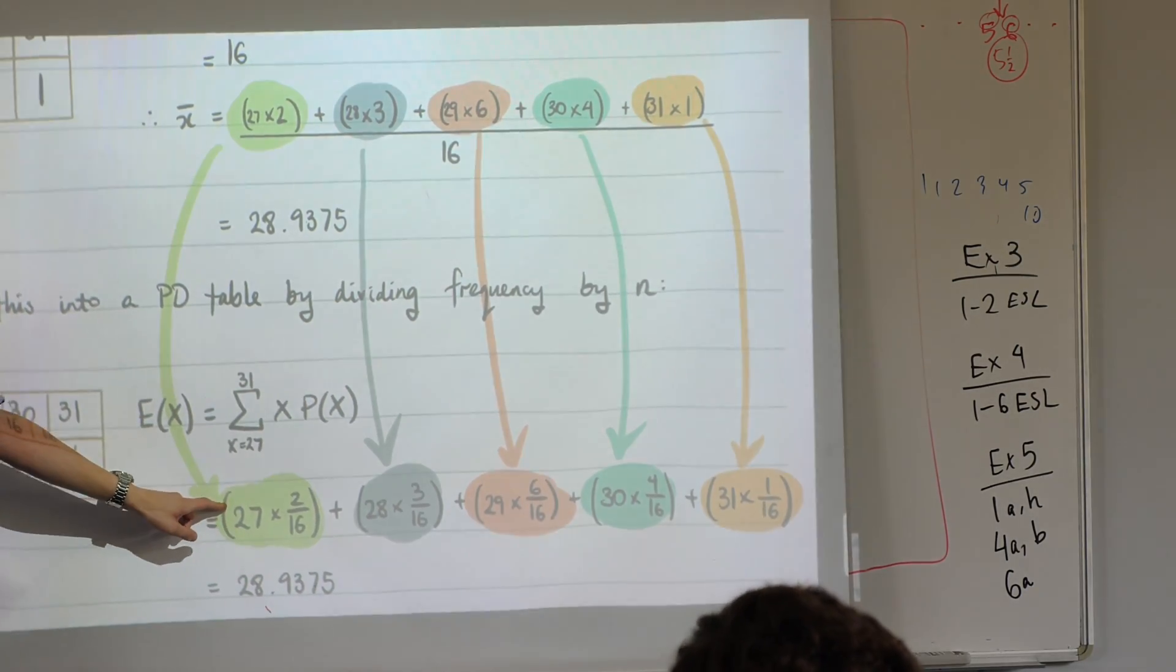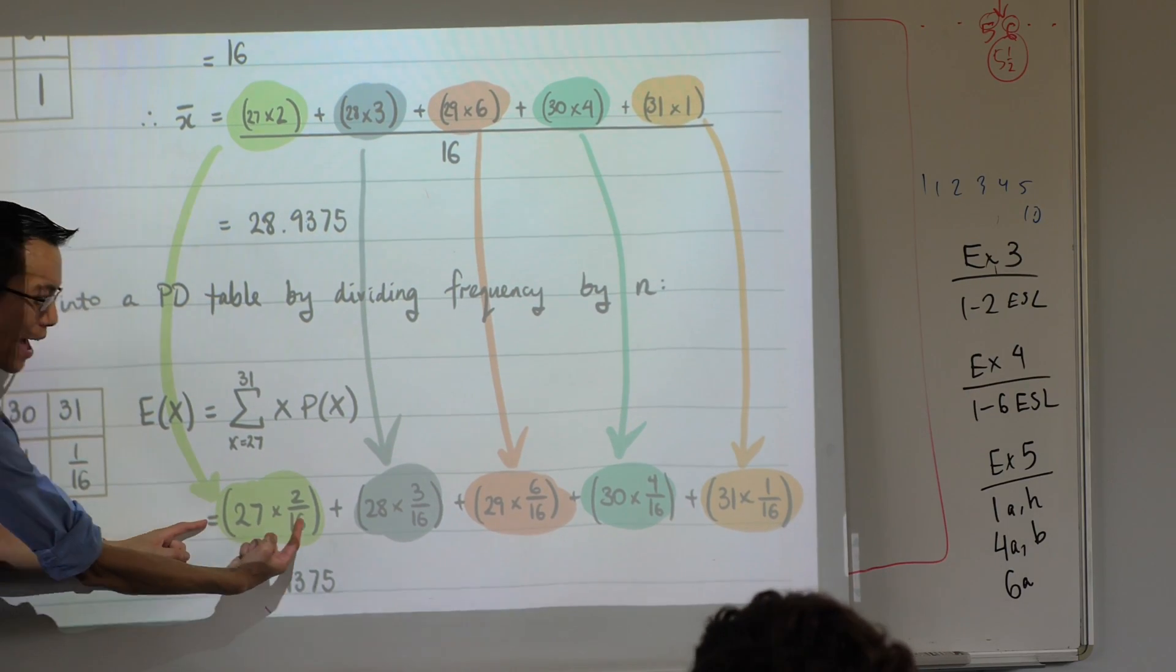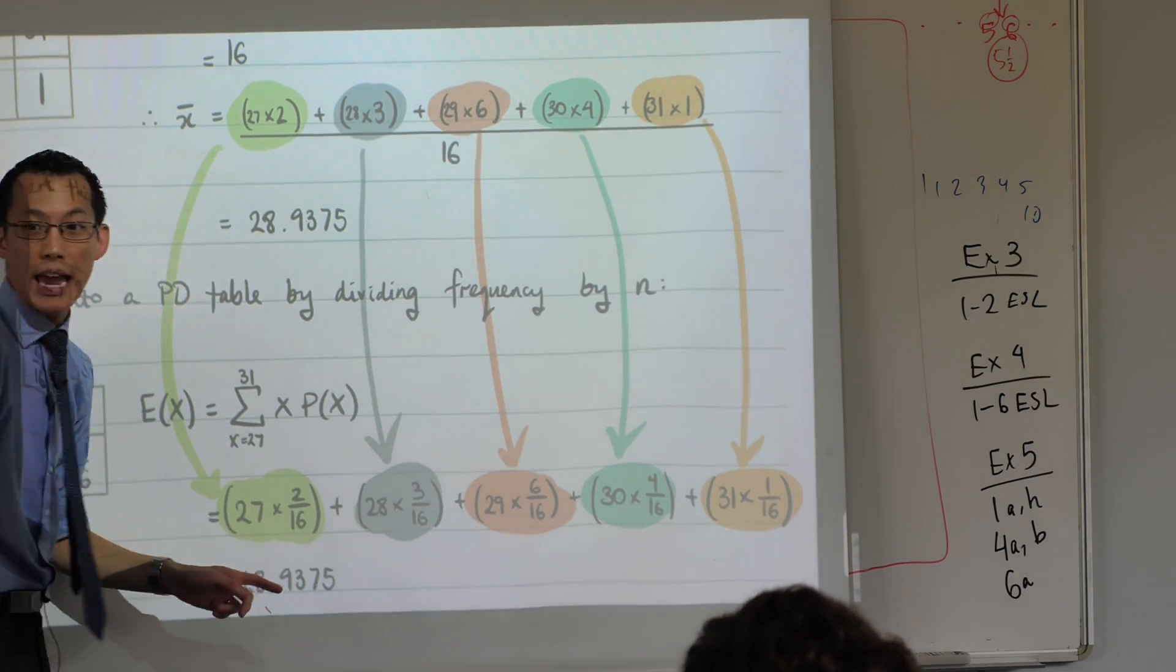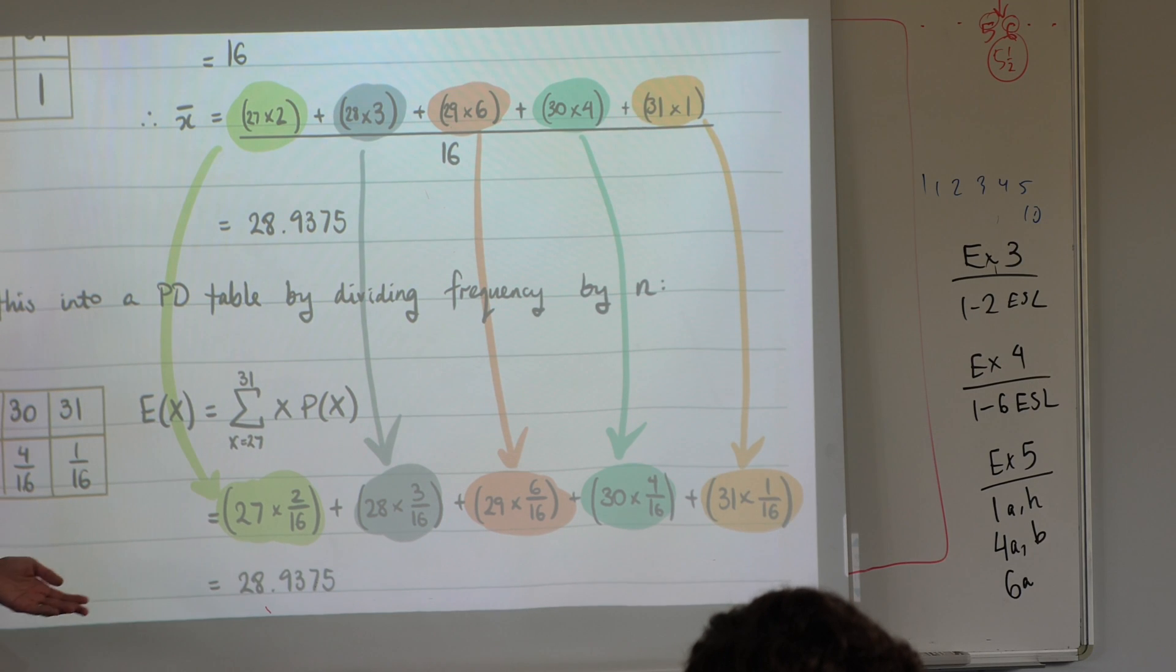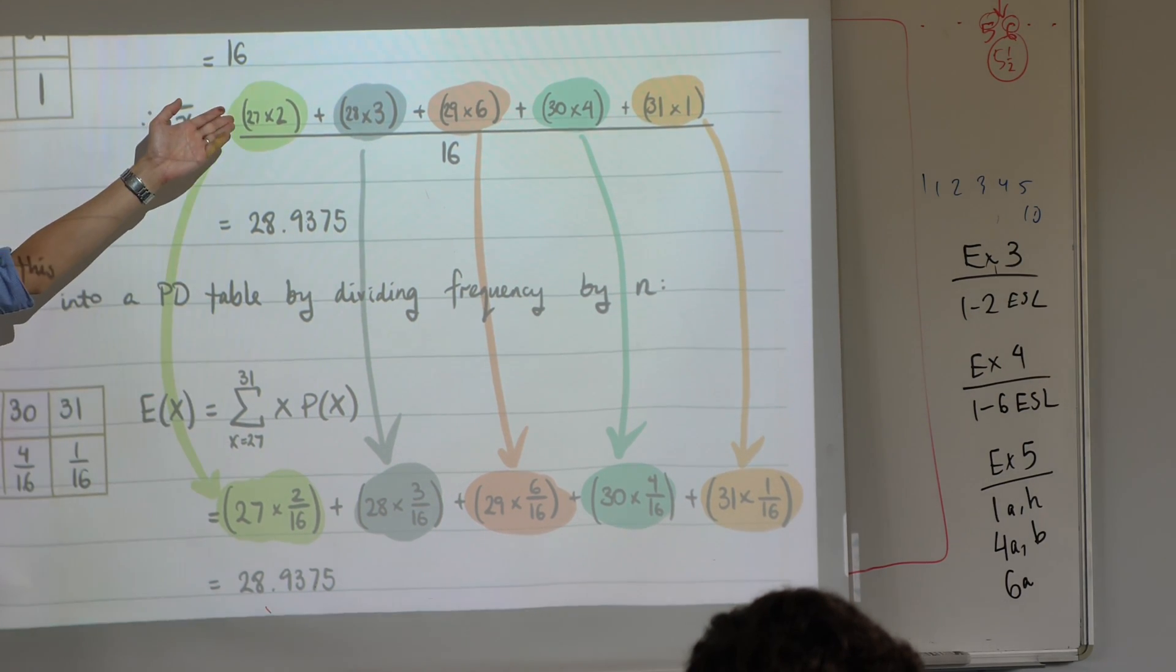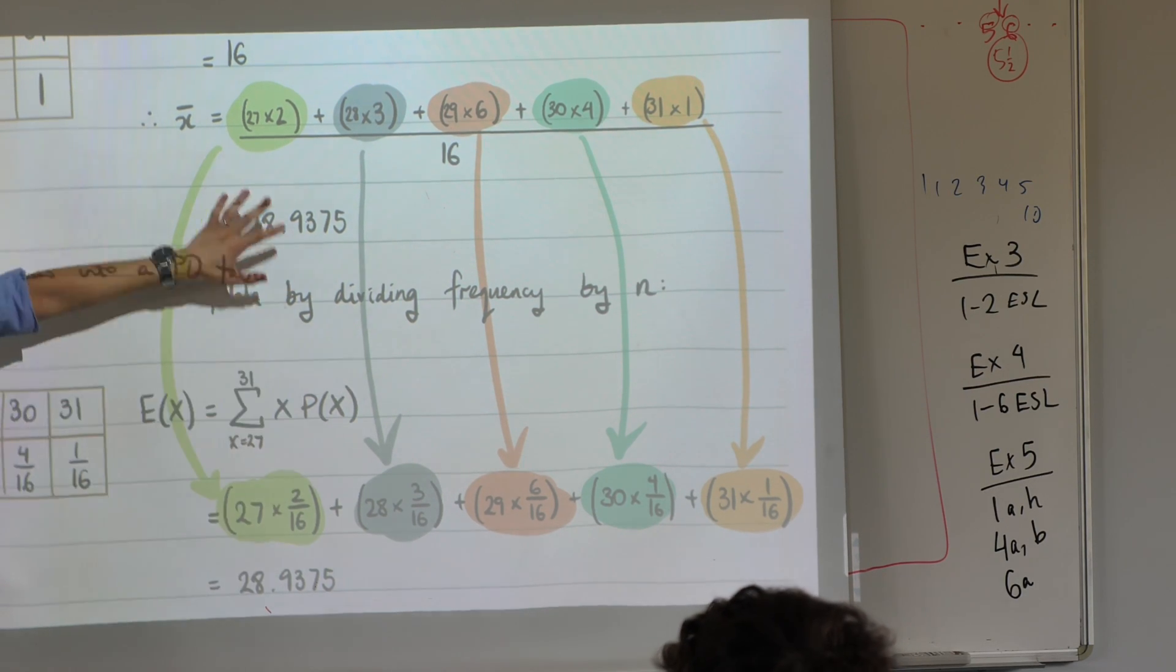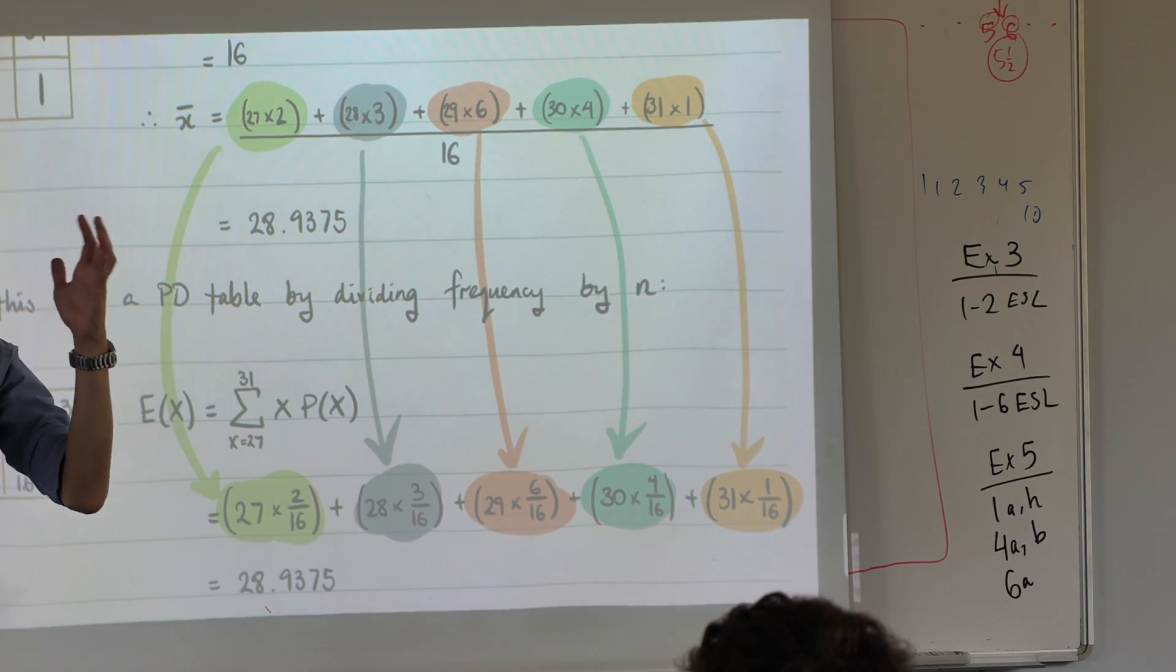But now look, that divided by 16 is what you had to do to turn each of these into a probability. Like three out of 16 is a probability. So that's why it's exactly the same calculation just in slightly different order. So I want you to think about expected value and the mean as parallel ideas.